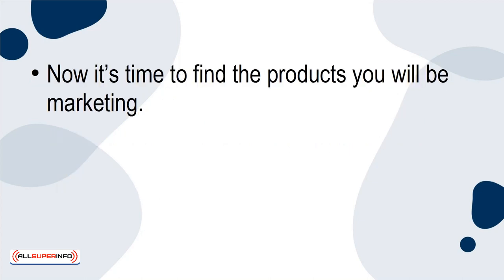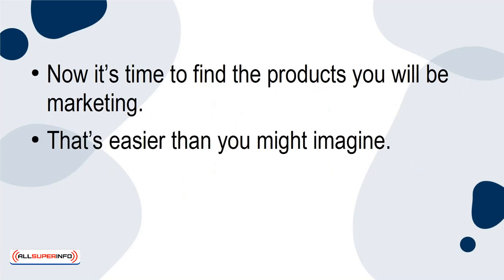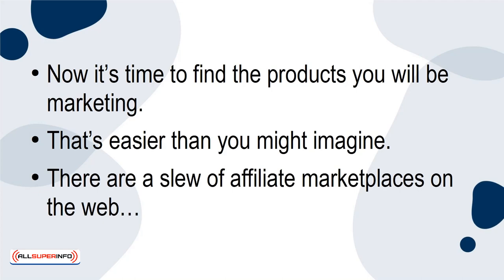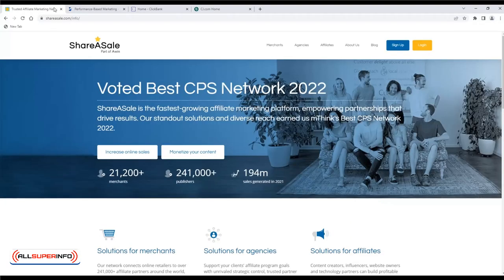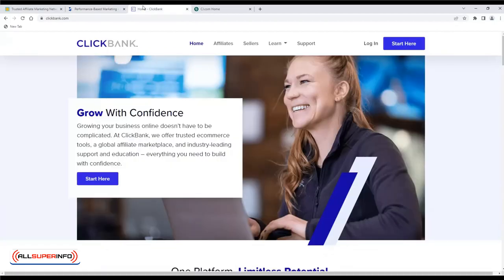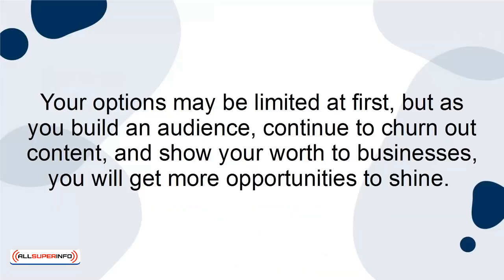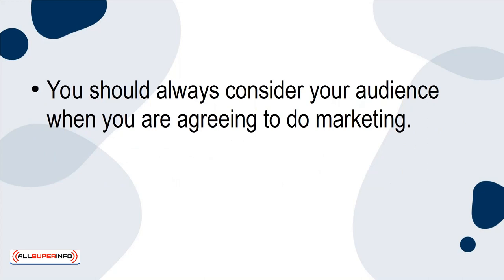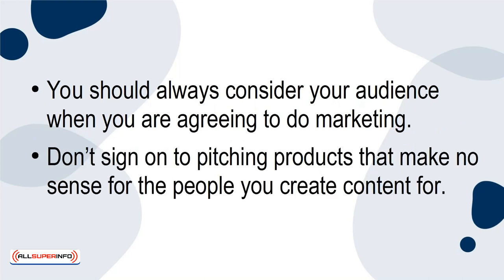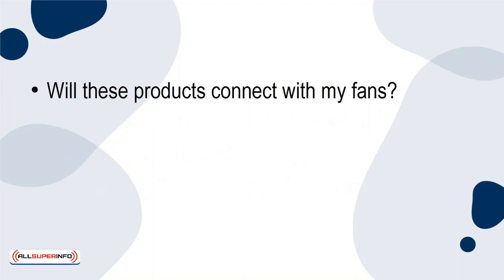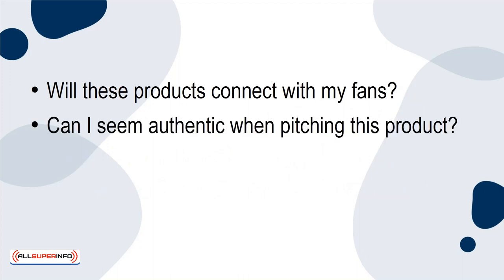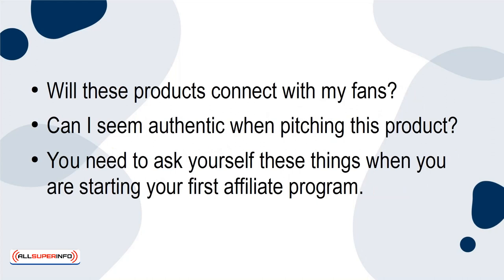Now it's time to find the products you will be marketing. That's easier than you might imagine. There are a slew of affiliate marketplaces on the web, including ones such as ShareASale, FlexOffers, ClickBank, CJ Affiliate, and more. Your options may be limited at first, but as you build an audience, continue to churn out content, and show your worth to businesses, you'll get more opportunities to shine. You should always consider your audience when agreeing to do marketing — don't sign on to pitching products that make no sense for the people you create content for. Will these products connect with my fans? Can I seem authentic when pitching this product? You need to ask yourself these things when starting your first affiliate program.